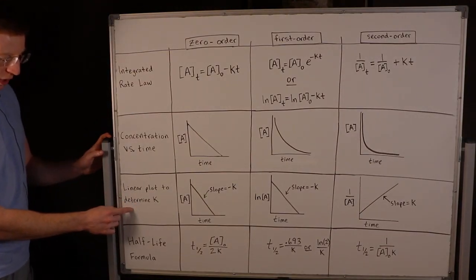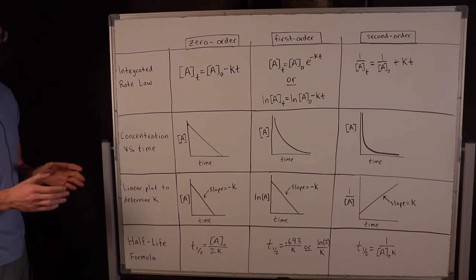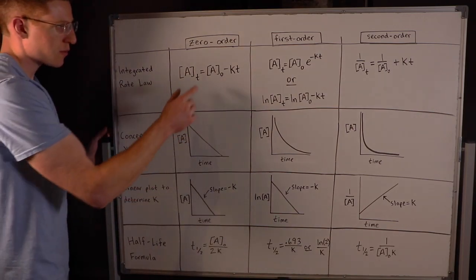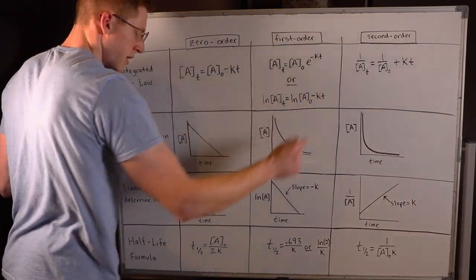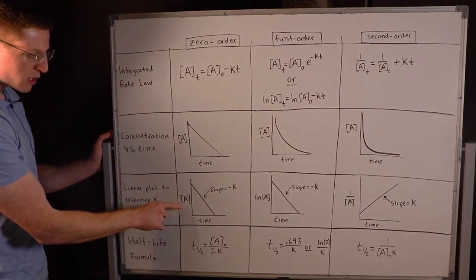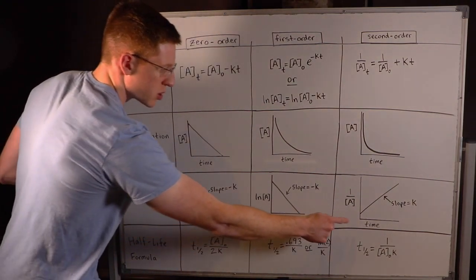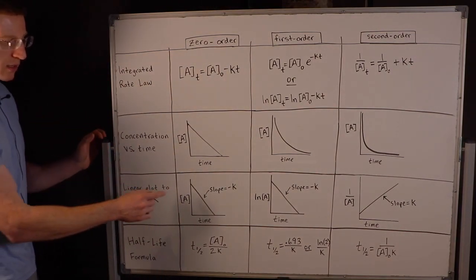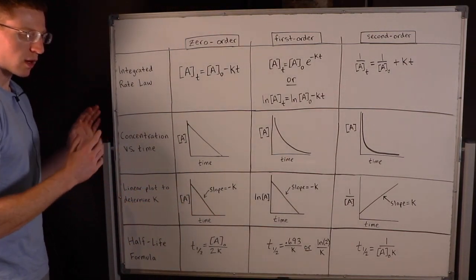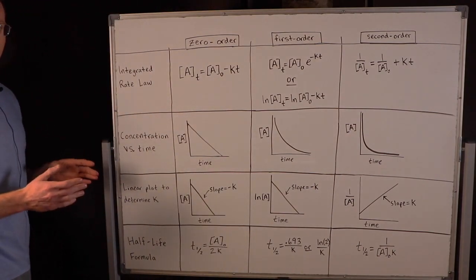In order to solve this problem, I want to remind you of some information that I showed you on that chart at the beginning of the video. This row here, the linear plot to determine K, the rate constant, is going to be very important. You can see that for each type of process—zero-order, first-order, and second-order—we use different units on the X and Y axes in order to achieve a slope that is straight. A straight line implies that the slope stays the same.